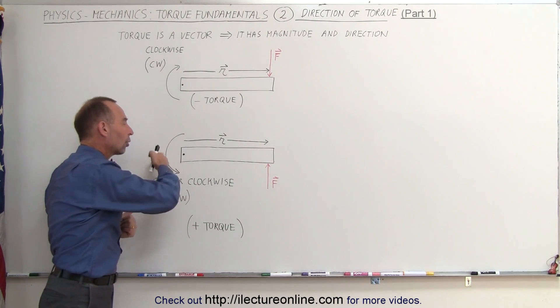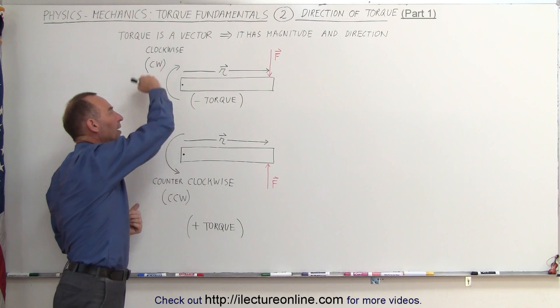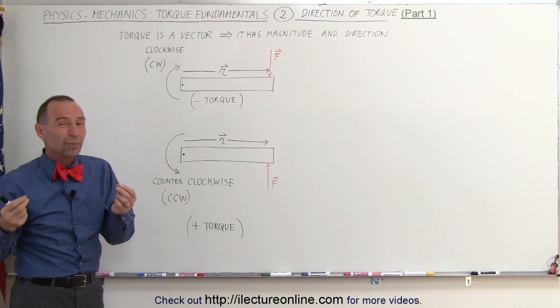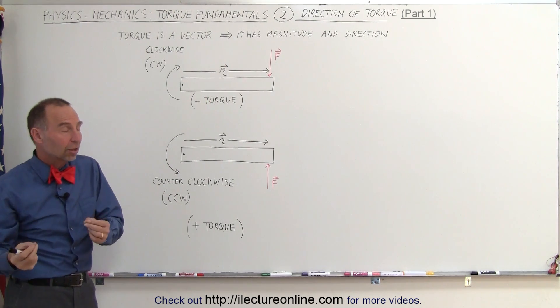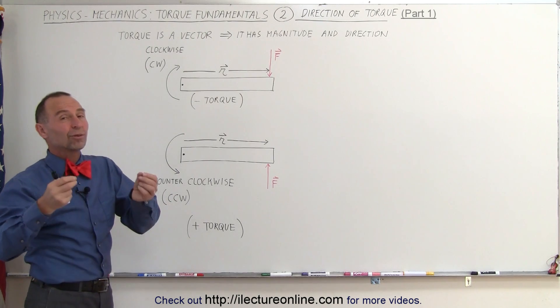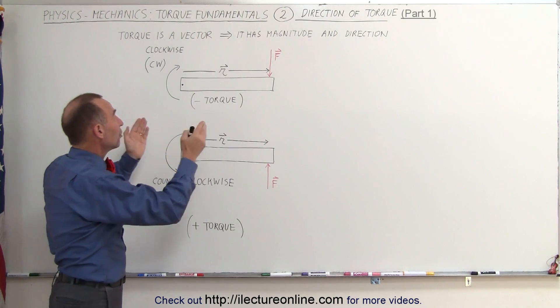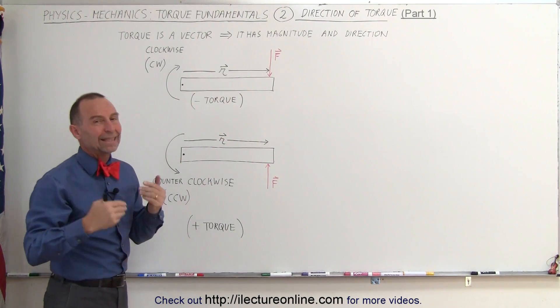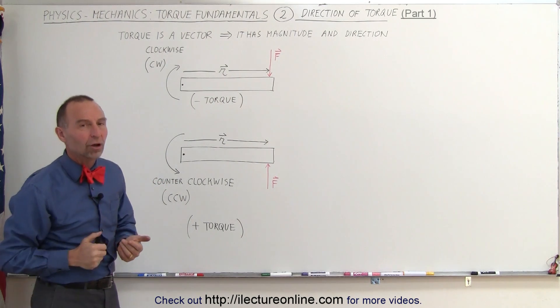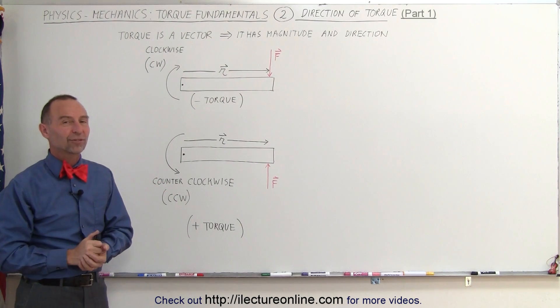A positive torque is a counterclockwise torque. A negative torque is a clockwise torque. And the best way to figure out if it's clockwise or counterclockwise is to say, if this was the only force acting on it, which way would the object rotate? And that will determine the direction of the torque. That's how it's done.